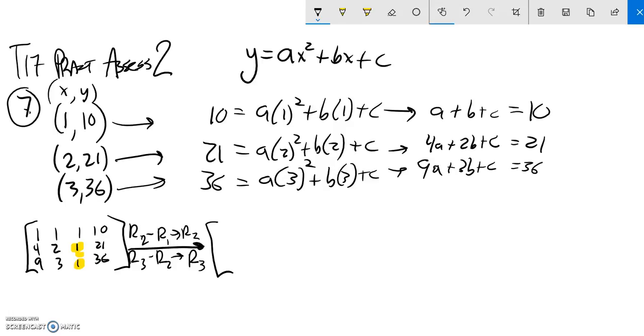So if I do that, first row is unaffected. 4 minus 1 is 3. 2 minus 1 is 1. 1 minus 1 is 0. 21 minus 10, that should give me an 11. Row 3 minus row 2: 9 minus 4 is 5, 3 minus 2 is 1, 1 minus 1 is 0, 36 minus 21.